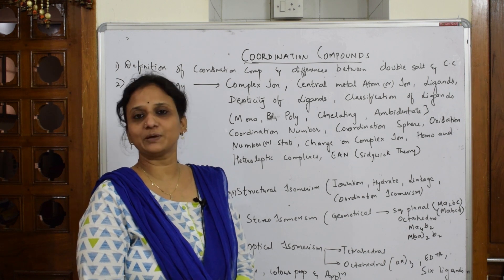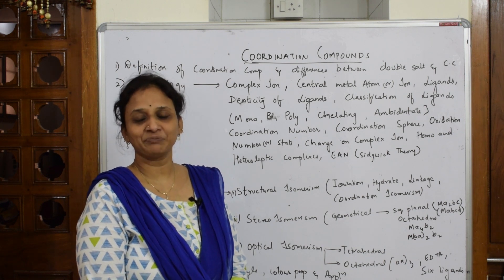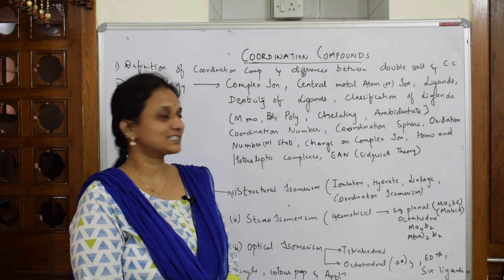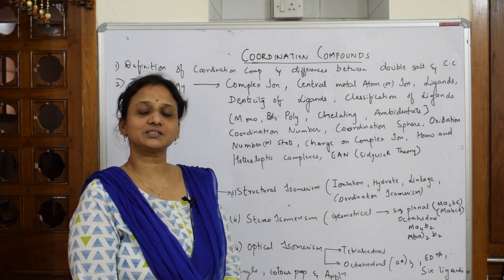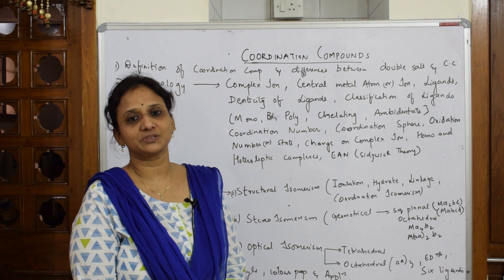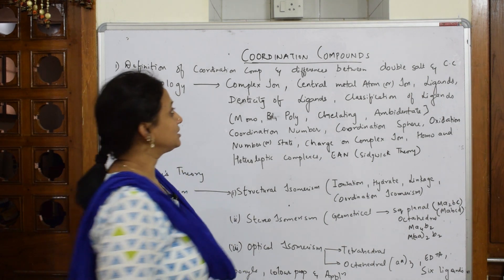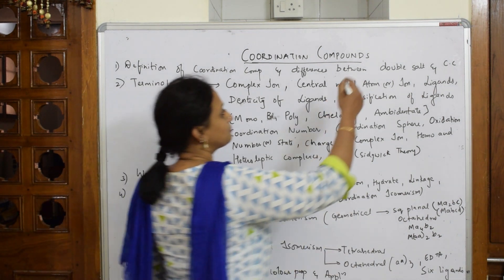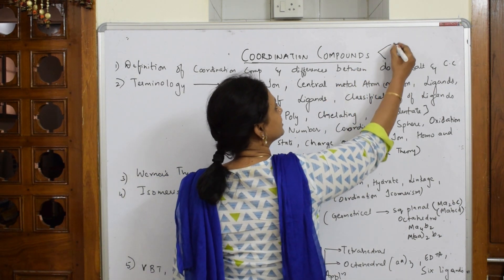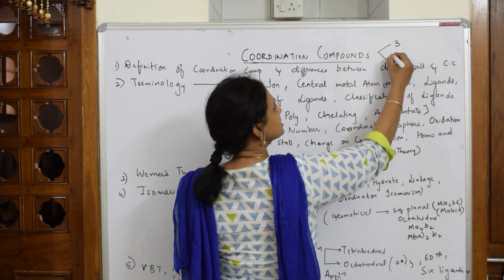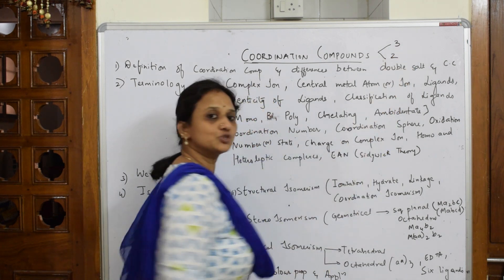We also completed the board paper successfully, so let's come back and start with a new chapter — that is coordination chemistry. The weightage for this chapter, coordination compounds, is five marks. You'll have three-mark questions as well as two-mark questions.